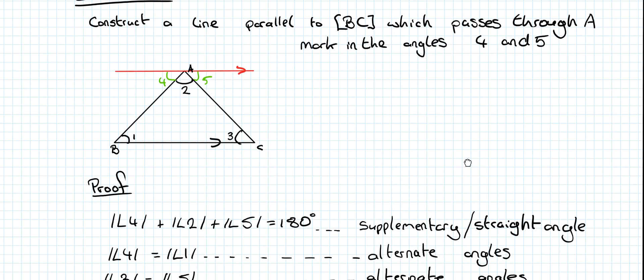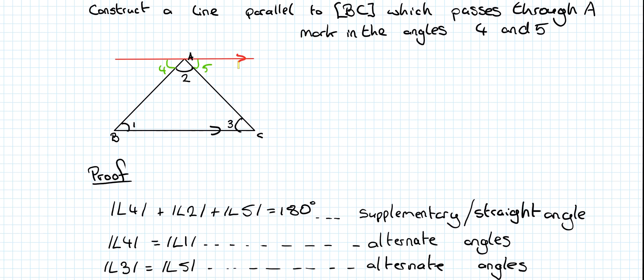On the other side then, I also get a Z shape. I get a Z shape, so I know 3 is going to equal angle 5, because they are also alternate angles.